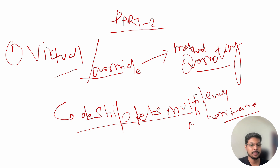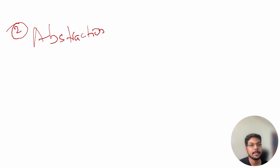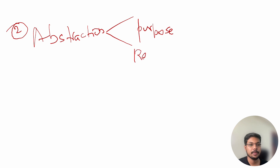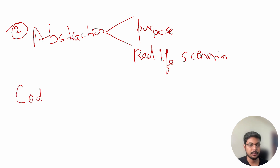Question number two is: what is abstraction? You can explain what the purpose of abstraction is, give a real-life example or scenario where abstraction is being used, and explain how it helps. Make sure you also prepare a code snippet if asked, as the interviewer may ask you to write code to implement abstraction. This is an OOP concept, so make sure you have gone through all the implementations.